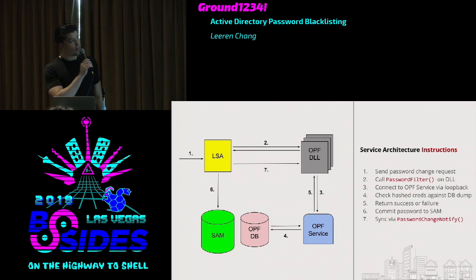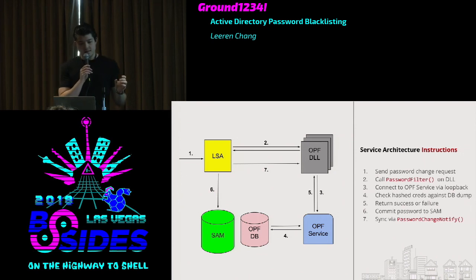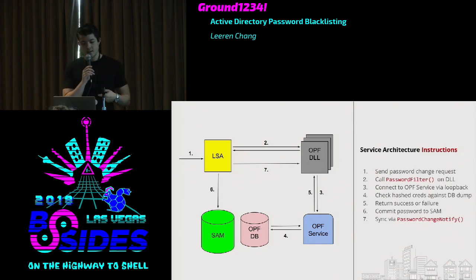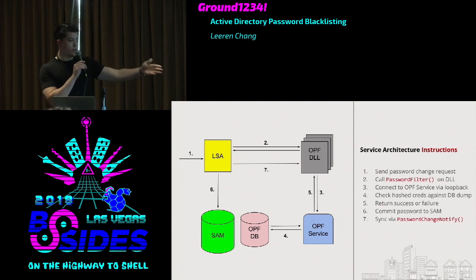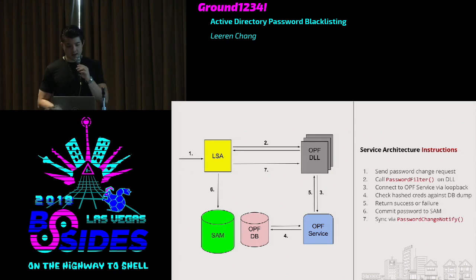The architecture works like this: the client password request goes to the Local Security Authority, which calls the password filter on every registered DLL. Instead of directly authenticating through DLL code, you call — through your loopback interface — a service called OPF (Open Password Filter). That service does the authentication using your registered SQL server, and depending on success or failure, the result is committed to the Security Accounts Manager.